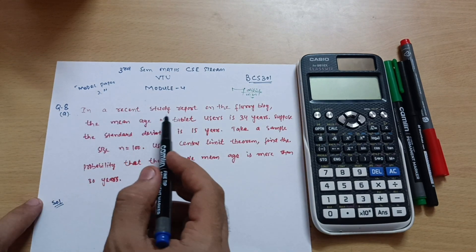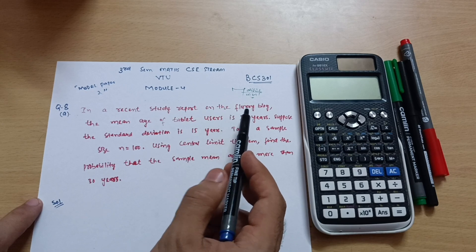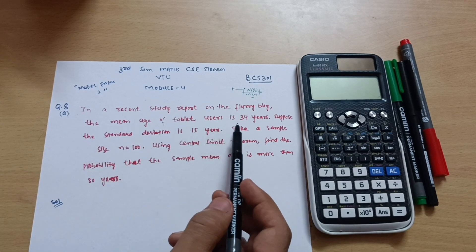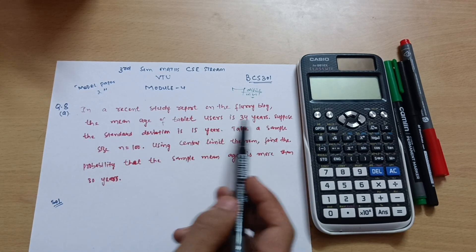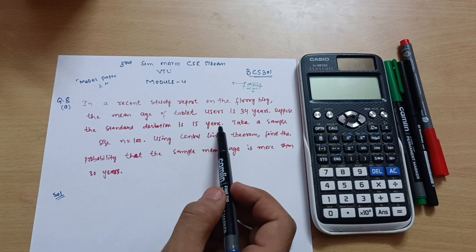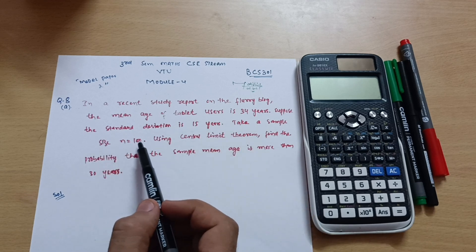This is question number 8a. In a recent study report on the Flurry blog, the mean age of tablet users is 34 years. Suppose the standard deviation is 15 years. Take a sample size n equal to 100.